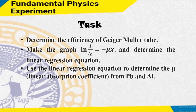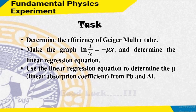Here is your task: from the data obtained from the teaching assistant, you will perform calculations. First, determine the efficiency of the Geiger-Muller tube. Second, graph the relation ln(I/I0) equals minus mu x, and perform linear regression to get the equation. From the linear regression equation, find mu, the linear absorption coefficient, for both PB and aluminum. Good luck with your report. Stay healthy. Thank you for your attention. See you.